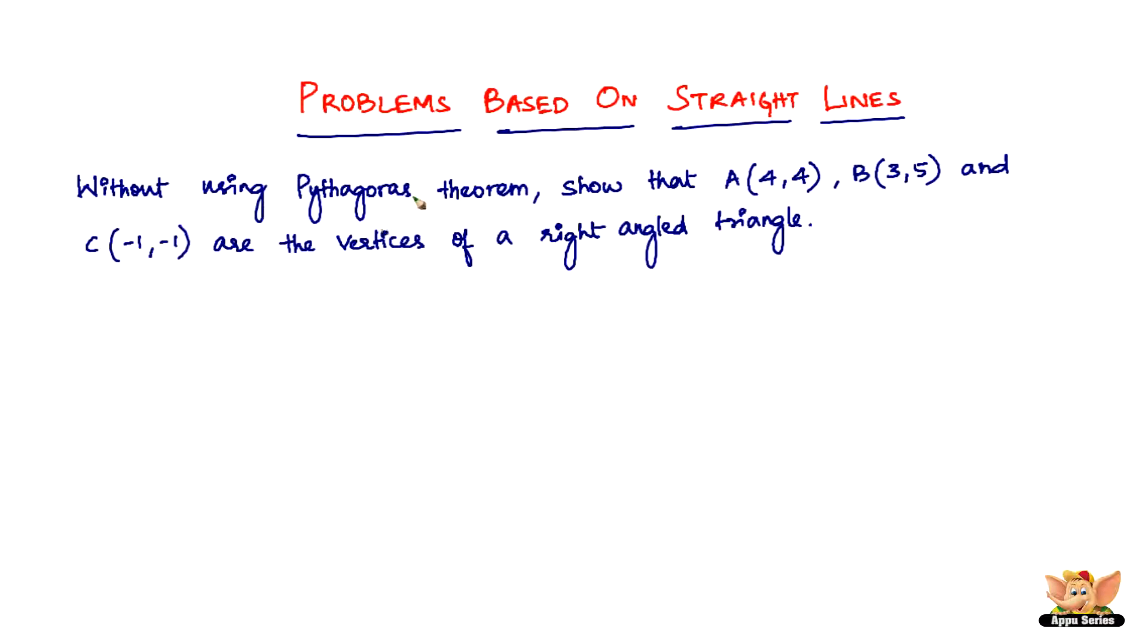The one thing that we have to remember before we solve these kinds of problems is we need to remember this condition that when two lines are perpendicular to each other, the product of their slopes equals minus 1. And this is important because in a right-angled triangle, two sides are perpendicular to each other. That is the only clue that you need to proceed with this problem.